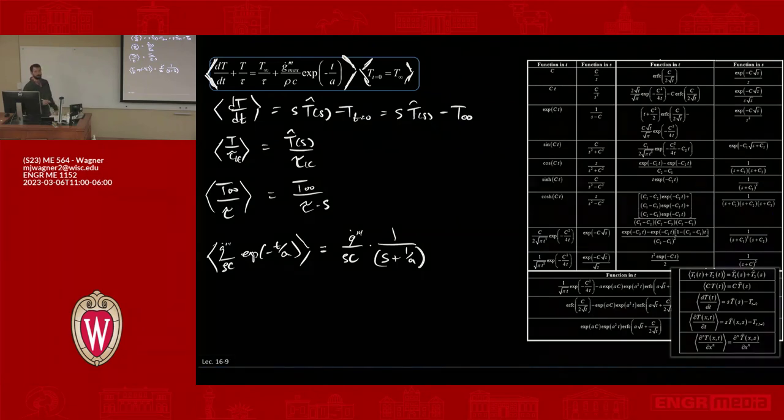We've basically taken the problem, plugged it into the s domain. As part of that, we've employed the initial condition so we can forget about that part of it, and we're good to go with this. We just add it all back together. So this equivalent statement is: s times T hat—I'm just going to call it T hat, we'll assume that's T hat of s—minus T infinity.